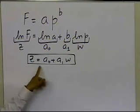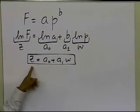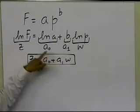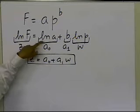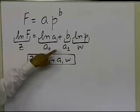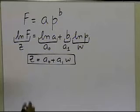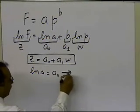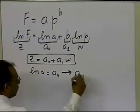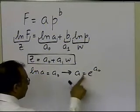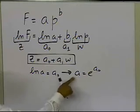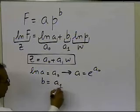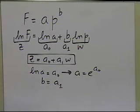Since z versus w is a linear relationship, if we find a0 and a1, we can recover the original constants. Since log(a) = a0, it follows that a = e to the power a0. And b is simply a1 itself, so no further transformation is needed there.